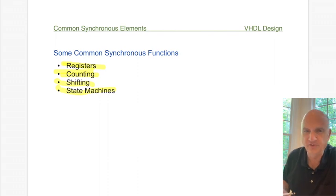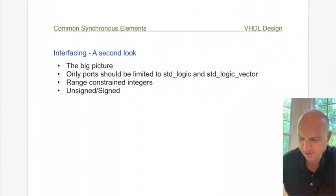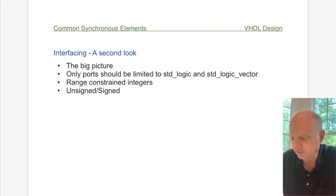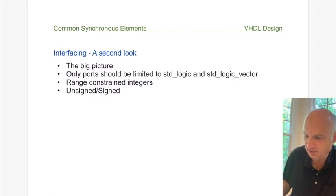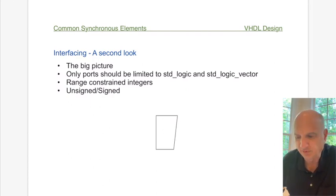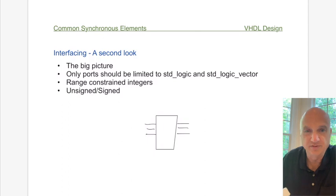State machines are next time, but right now we're going to look at some other simpler examples to help us understand how sequential systems work. Before we do that, let's look at the idea of interfacing. In the VHDL world, most things are represented as boxes or blocks, and those blocks have a series of inputs and a series of outputs.